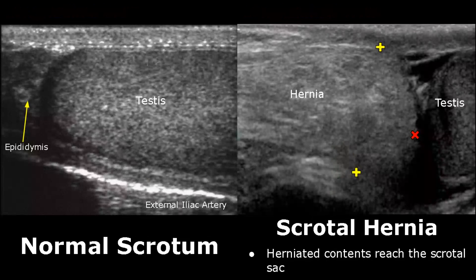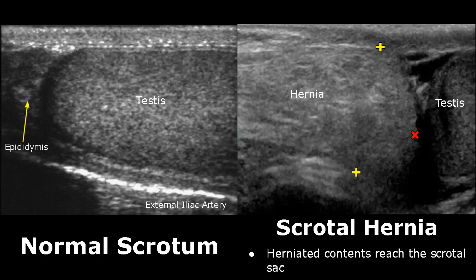This is an image of a normal scrotum. Over here we see a scrotal hernia — the herniated contents reach the scrotal sac. Using the Valsalva maneuver will make the hernia more apparent, causing the herniated contents to move further into the scrotal sac.